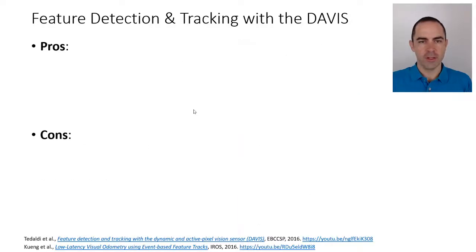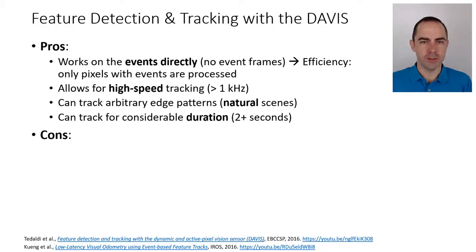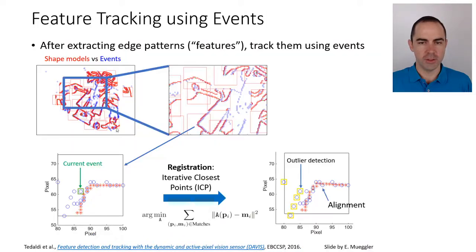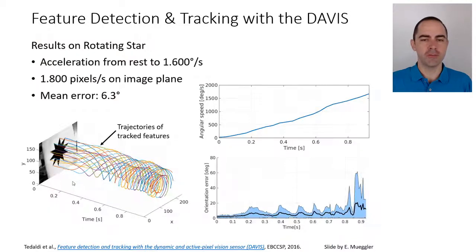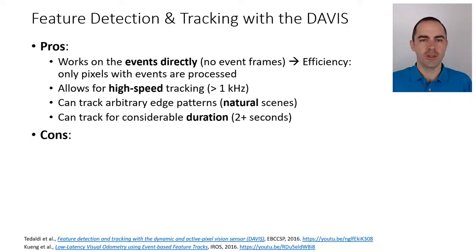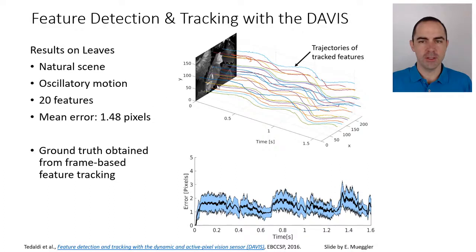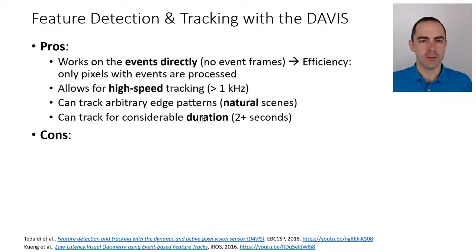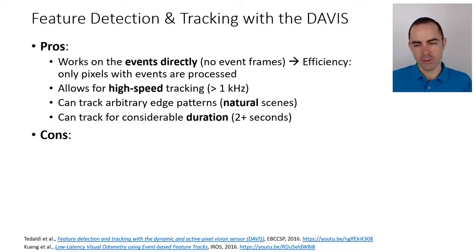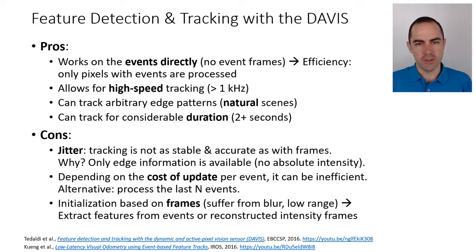What are the advantages of this method? It works directly on events — not on event frames — so it's efficient. Processing is done on point clouds using ICP; if a pixel has no events, it is not processed. This enables high-speed tracking as shown in the star example. It can track arbitrary edge patterns from natural scenes, such as the leaves example, and can track for considerable durations given that events have microsecond resolution.